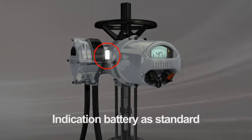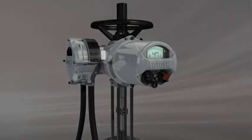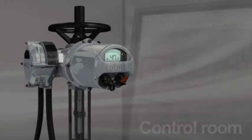An indication battery provides power for local and remote indication when the actuator main supply is unavailable.